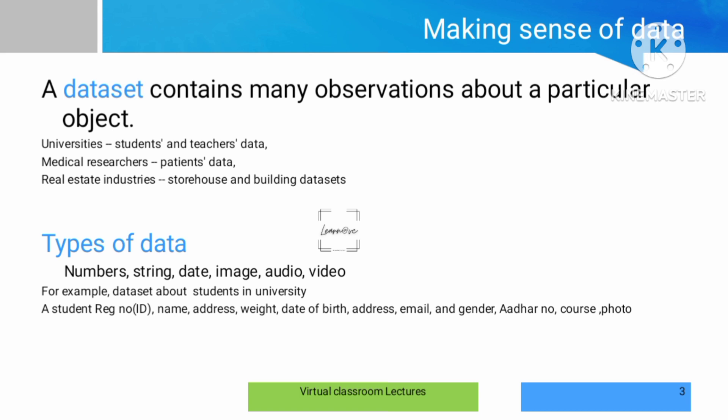For example, we can store a student dataset in a university, a patient dataset in medical research, and building datasets in real estate. In a dataset, there are a variety of data formats: numbers, alphabetic letters and string data, date formats, image data, audio data, and video data. Different kinds of data can be stored in a dataset, and that is why we analyze each type in detail.